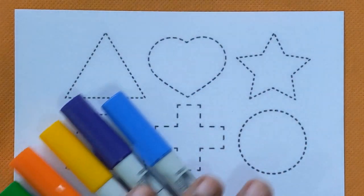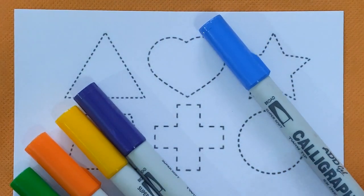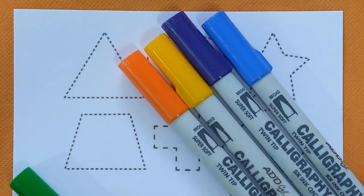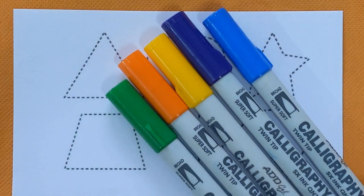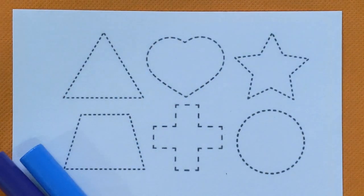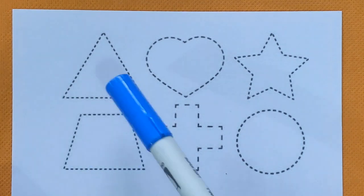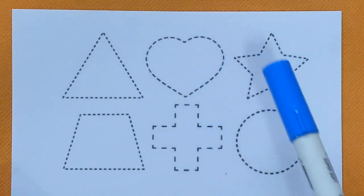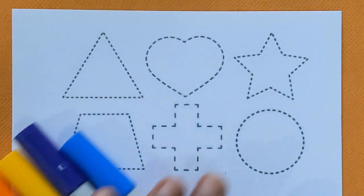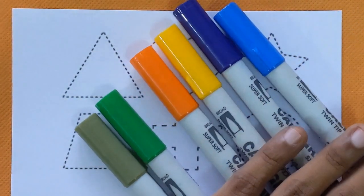Let's learn some color names: blue, violet, yellow, orange, light green, and olive green. Today we are going to draw triangle, heart, star, trapezoid, cross, and circle with these colors. So let's get started.